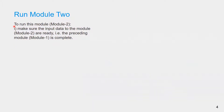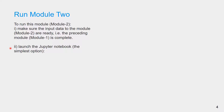There are four main steps to run this module. Firstly, make sure the input data to the module are ready — that is, the preceding module is complete. Secondly, launch the Jupyter notebook. The simplest option to open the Jupyter notebook is to start with opening the VAPOR WP master folder.